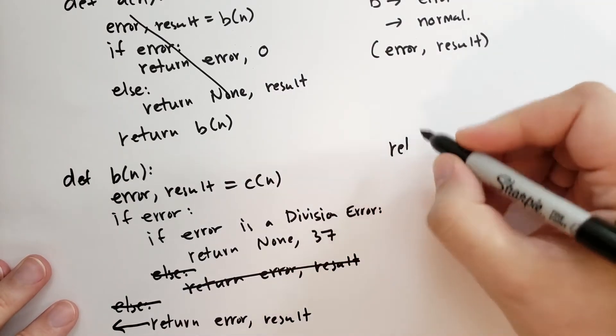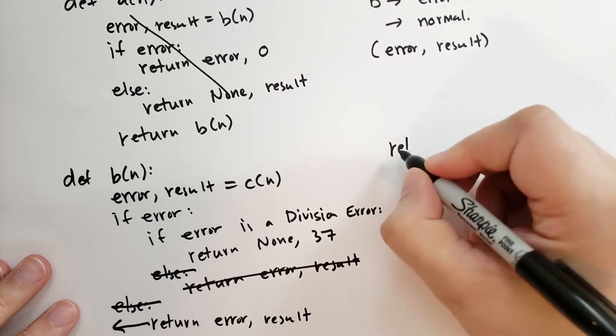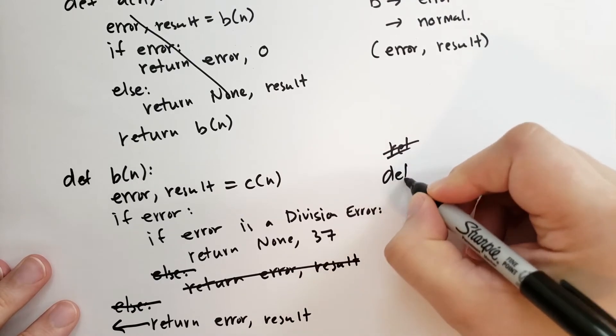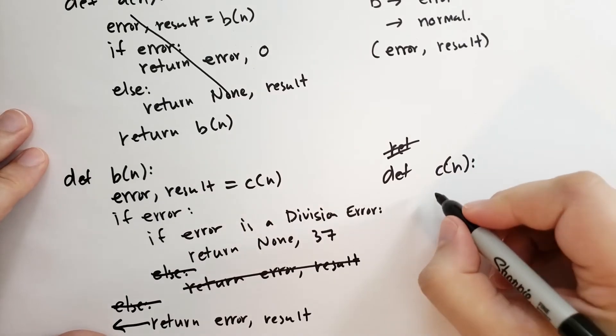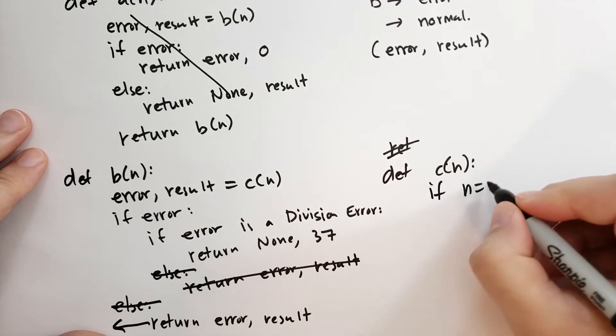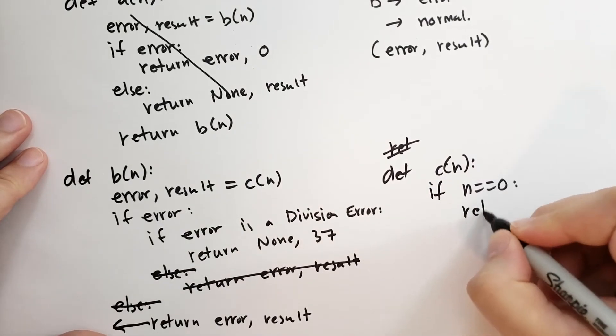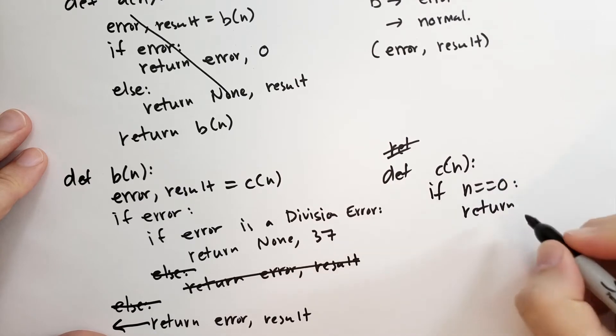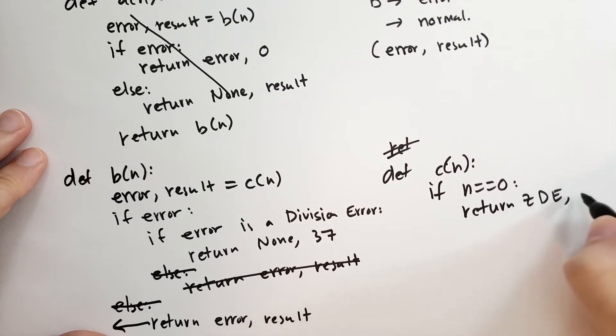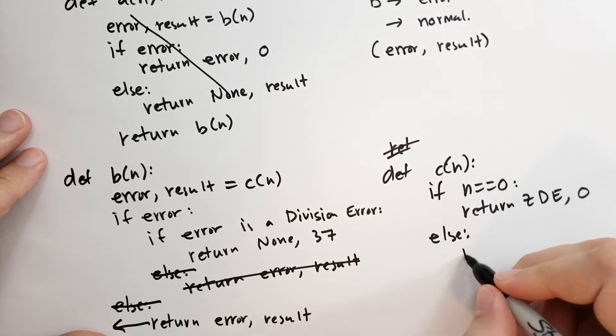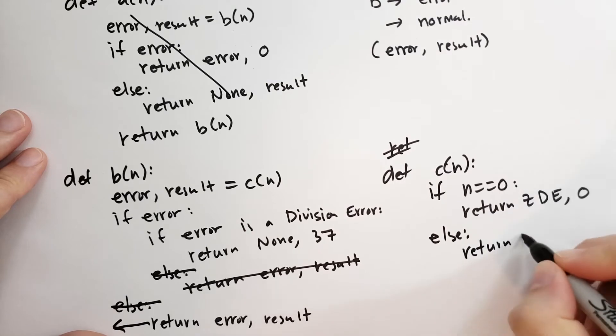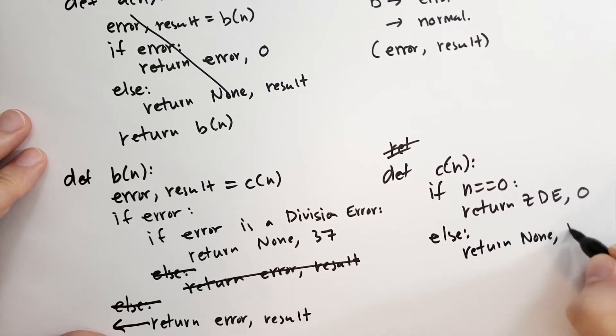We could have removed this line of code and this line of code and just dedent this. If there's an error and that error is a zero division error, then return that instead. Otherwise, run this line of code. c of n, let's define c of n. How would you raise an error in this case? Well, we're going to say if n is equal to zero, then we're going to return the zero division error and some dummy value, maybe zero. Else, we're going to return no error and one divided by n.